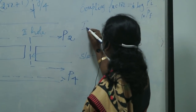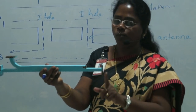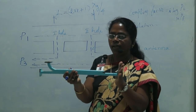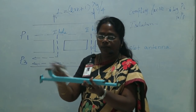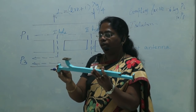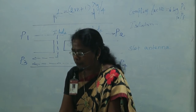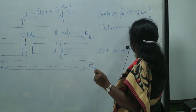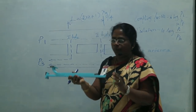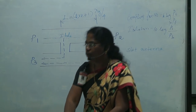Isolation refers to how the ports are isolated from each other. In this directional coupler, port 1 and port 3 are isolated, and port 2 and port 4 are isolated. Whenever the input is given through port 2, we will not receive any output from port 4, and vice versa — these two ports are completely isolated. Isolation is defined as: Isolation = 10 log(Pi / Pb), where Pi is the incident power and Pb is the back power.